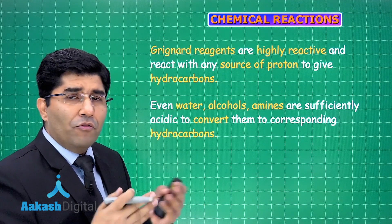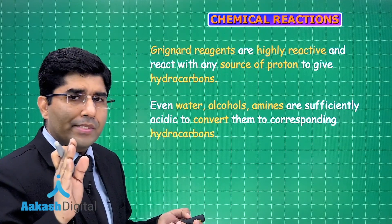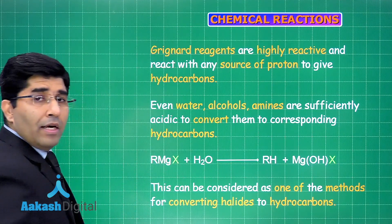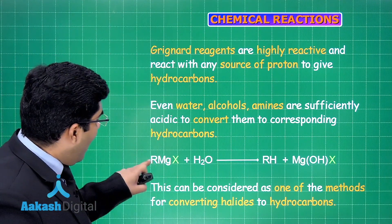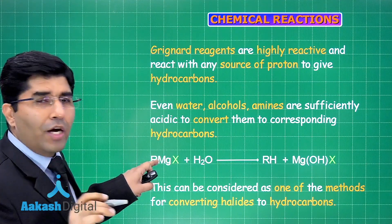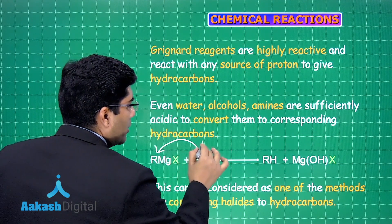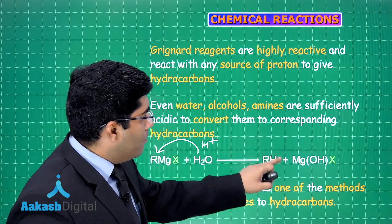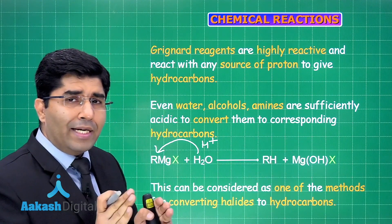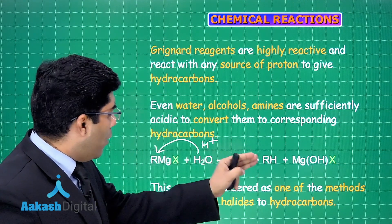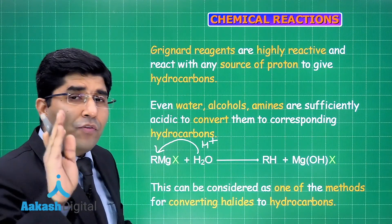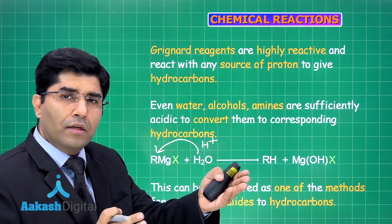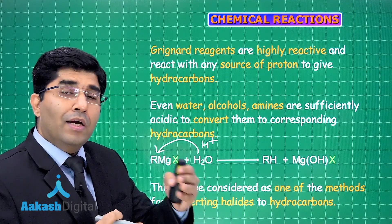Grignard reagents are very reactive towards sources of H⁺ ions — such as water, amines, carboxylic acids, or any acidic substance. If Grignard reagent reacts with water: in RMgX, R is an alkyl group with a negative charge, so H⁺ will come towards R⁻ and we get RH, which is an alkane, along with Mg(OH)X. This can be considered as one method of converting an alkyl halide to an alkane — for example, converting ethyl chloride to ethane.